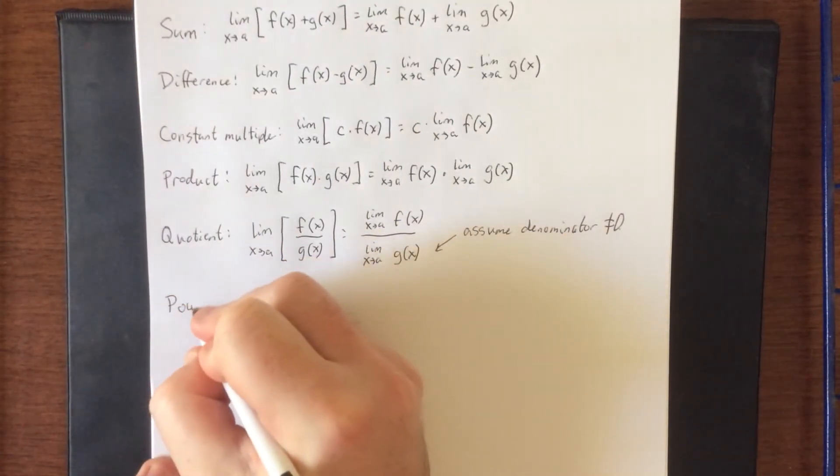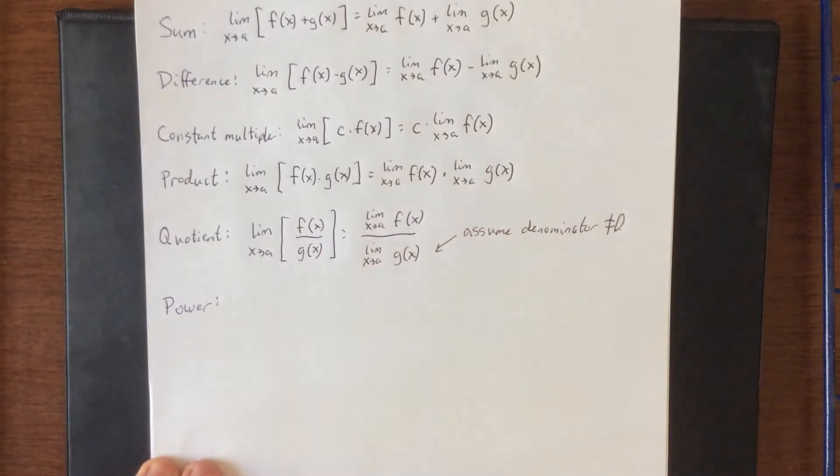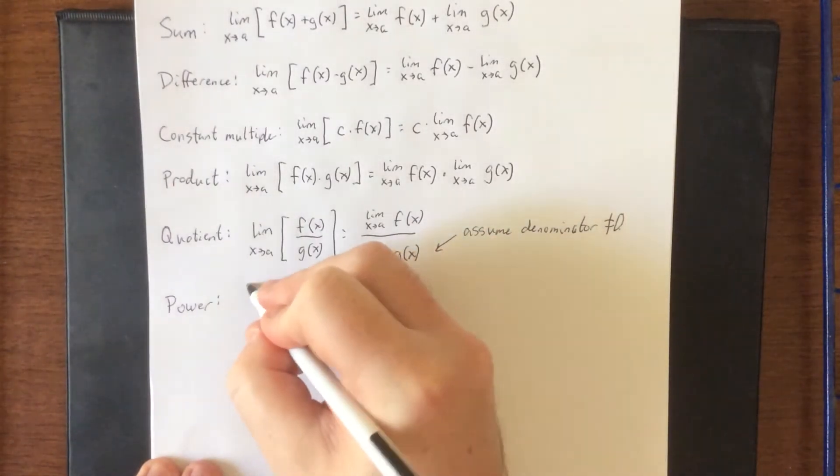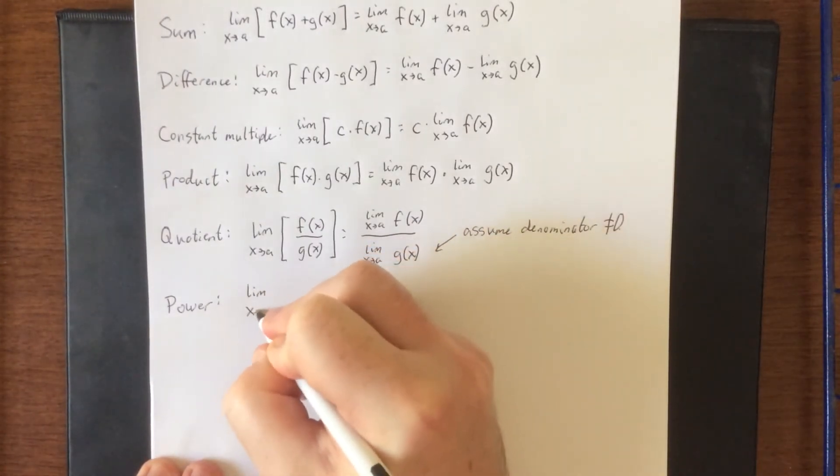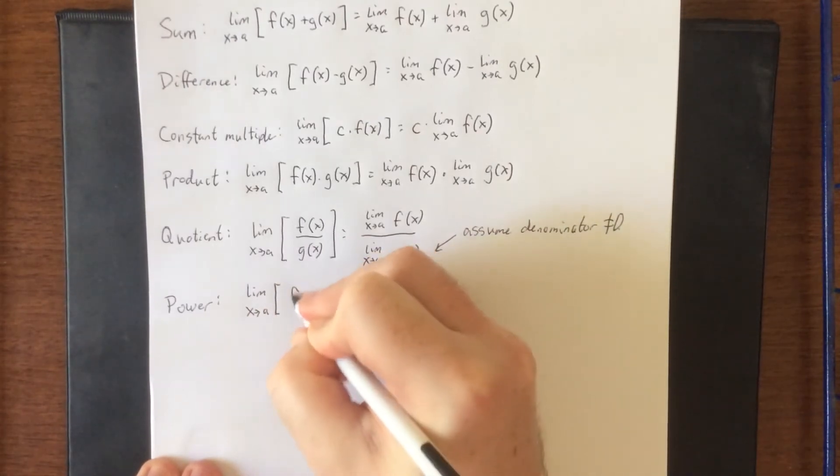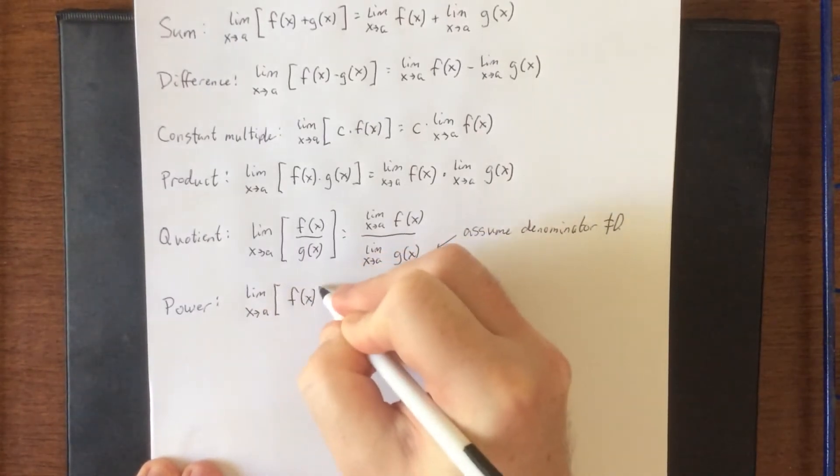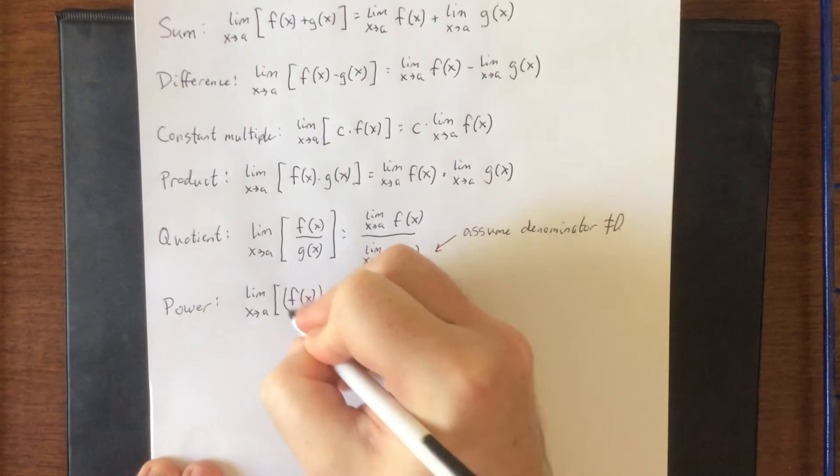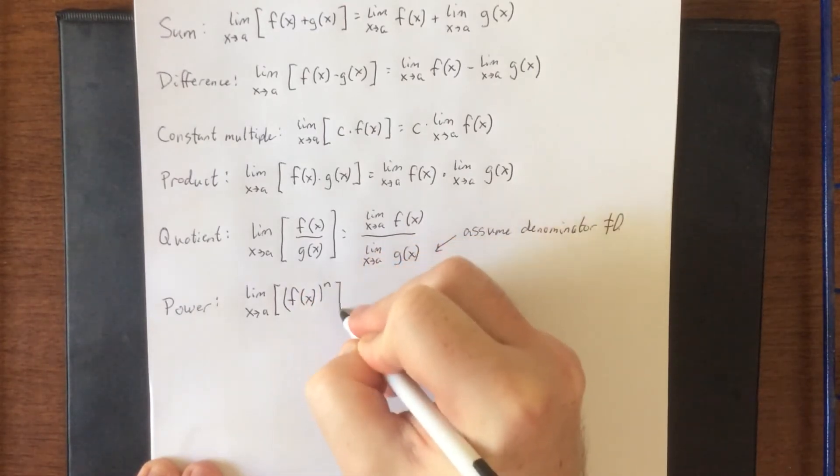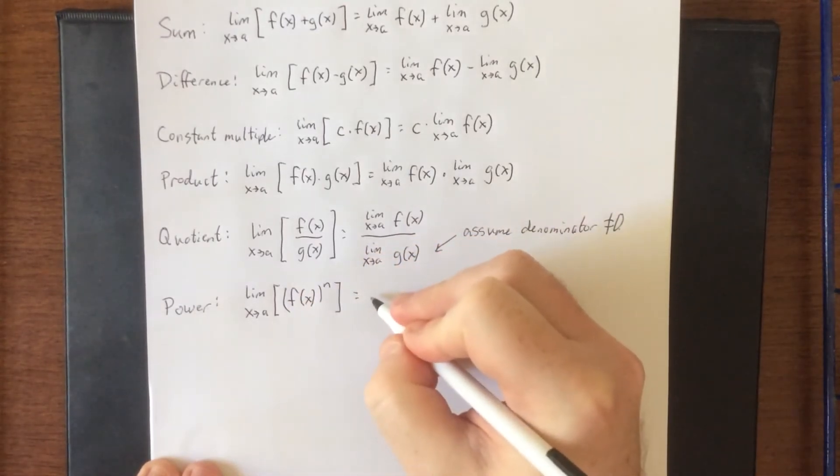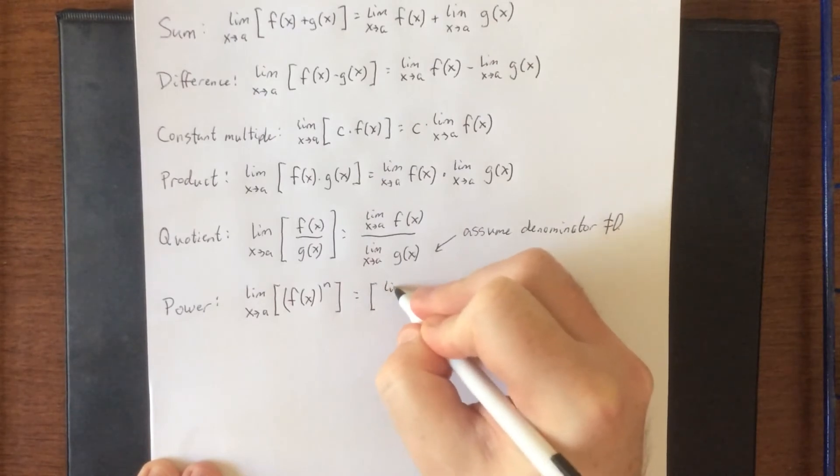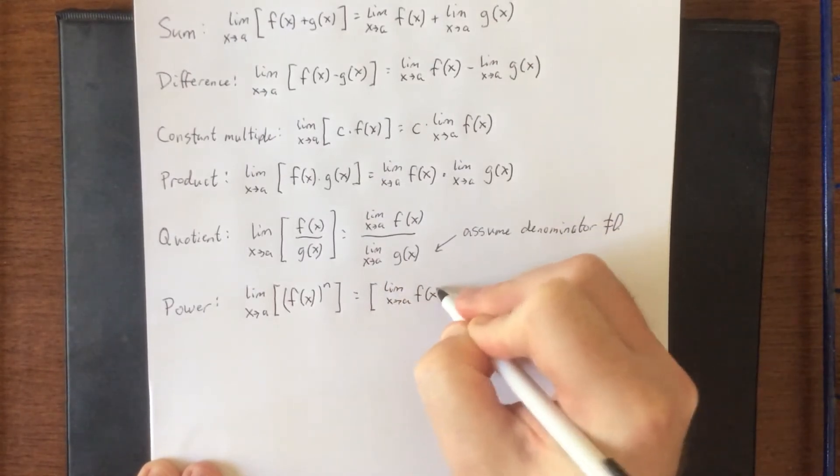There's the power law for limits. Power law for limits states that if I'm taking the limit as x approaches a of something raised to a power, that's the same as saying take the limit of the function and then raise it to that power.